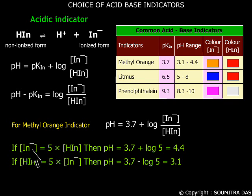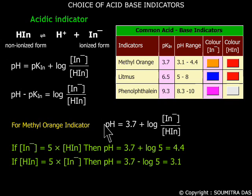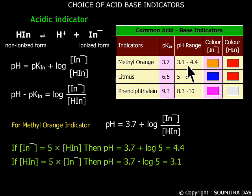If the ionized form concentration is 5 times greater than the non-ionized form, then the pH is 4.4 and the alkaline color predominates. If the non-ionized form concentration is 5 times greater, then the pH becomes 3.1 and the acid color predominates. This is called the pH range at which the indicator operates. For phenolphthalein, the pH range is 8.3 to 10.